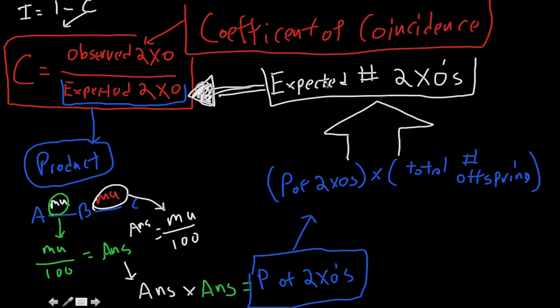Expected will usually be larger than observed. If it's not, double check. Always double check if you get values that are unusual, because if it's smaller than observed, then we're going to get a very large coefficient of coincidence.